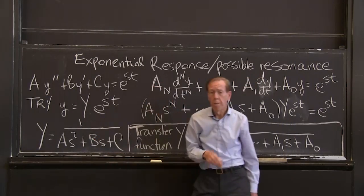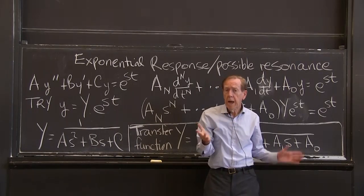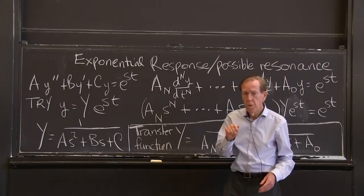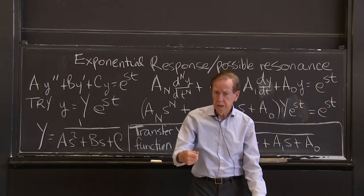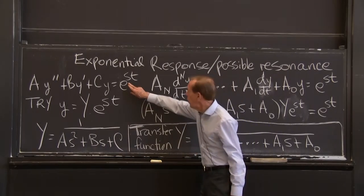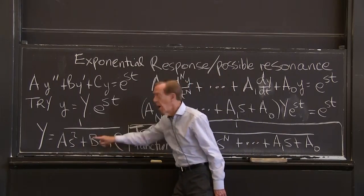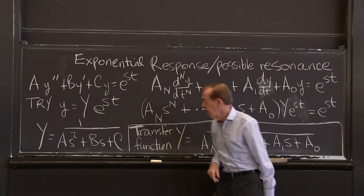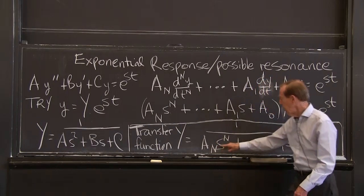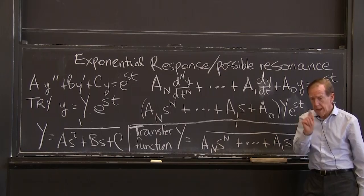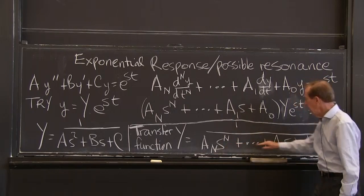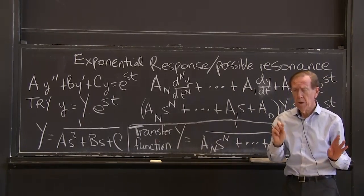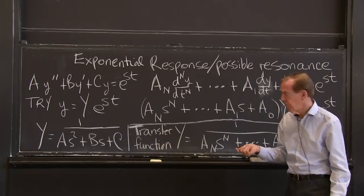That make that 0. Those are the s1 and s2 that go into the null solutions. Now, if the forcing s is one of those null solution s's, we have a problem. Because this is 1 over 0. And we haven't got an answer yet. 1 over 0 has no meaning.